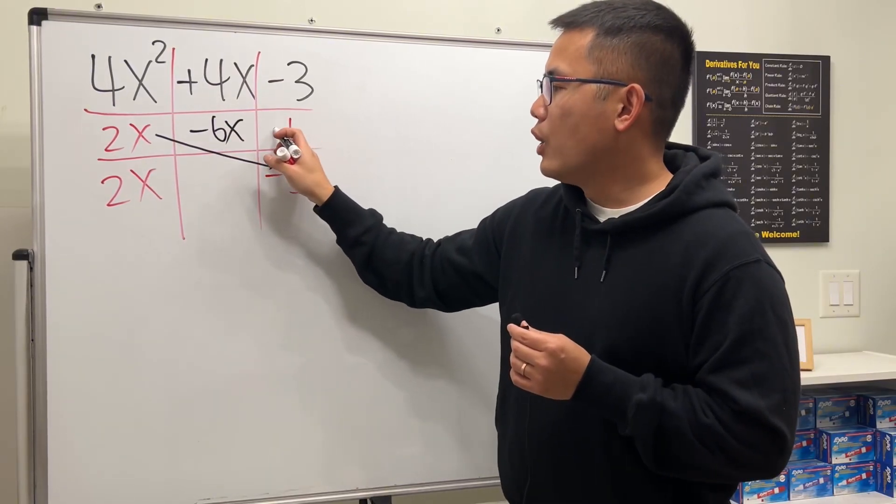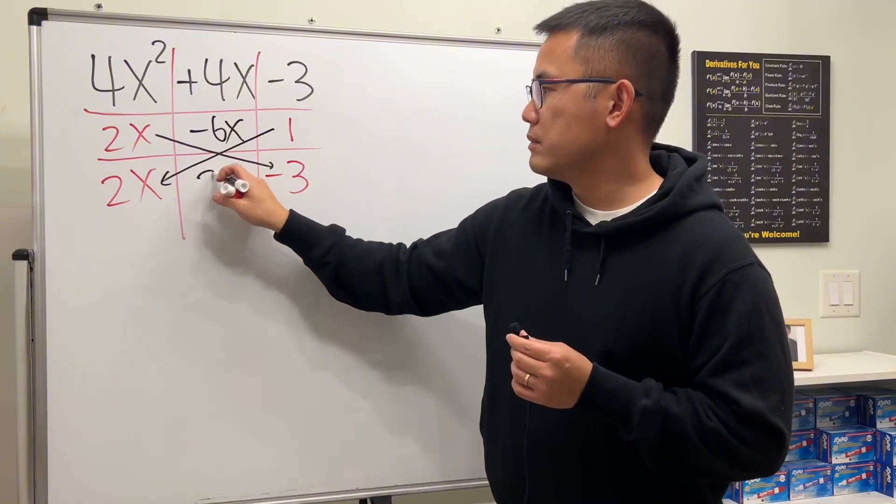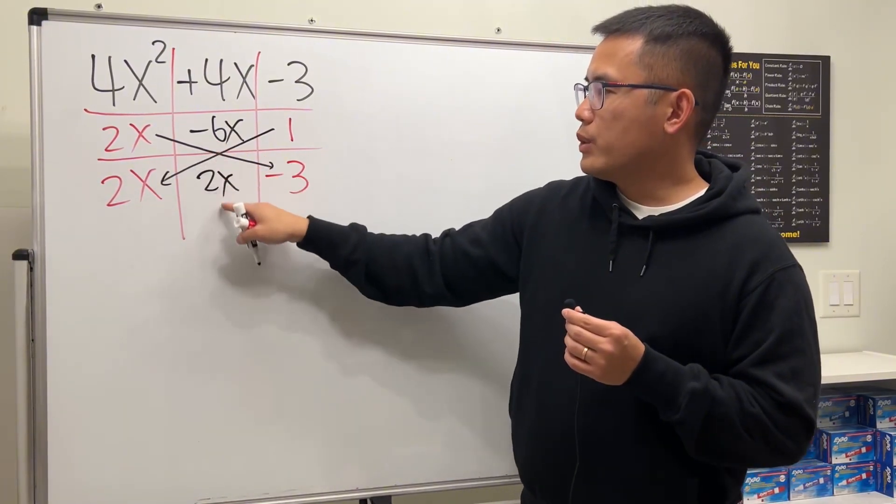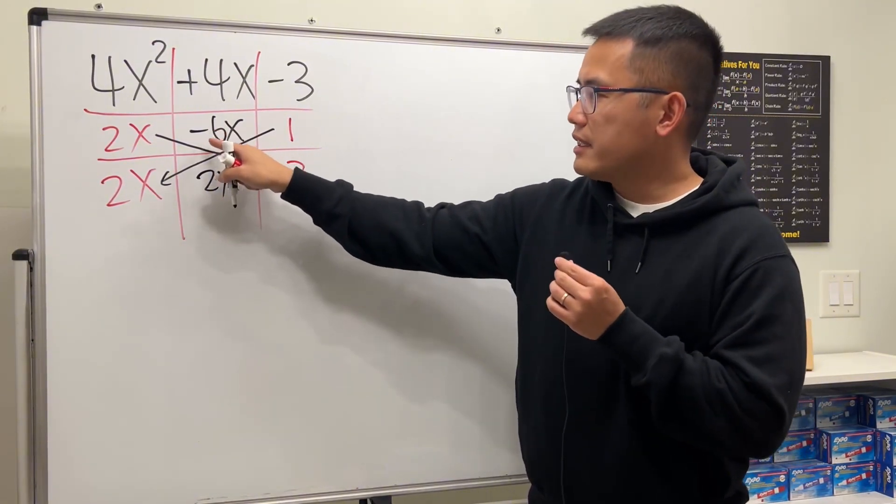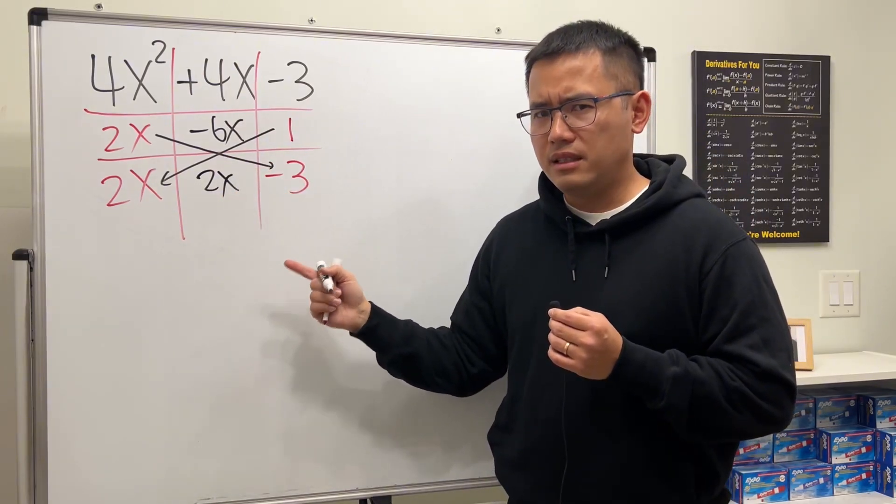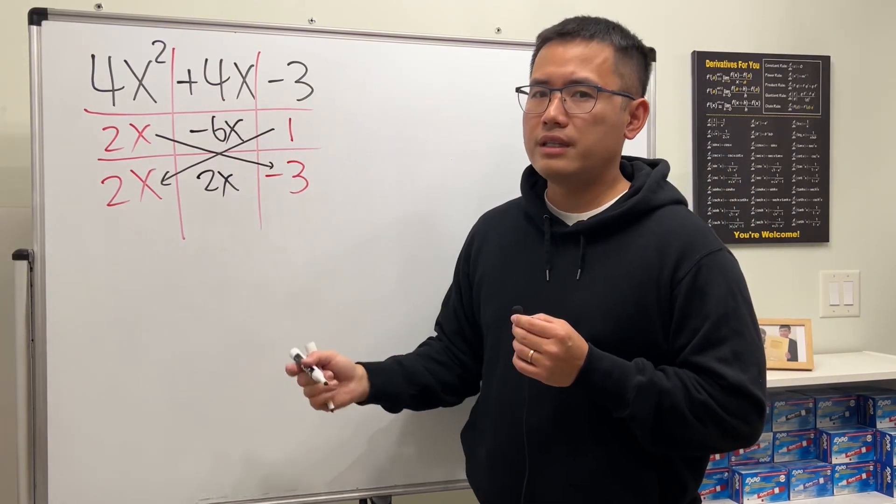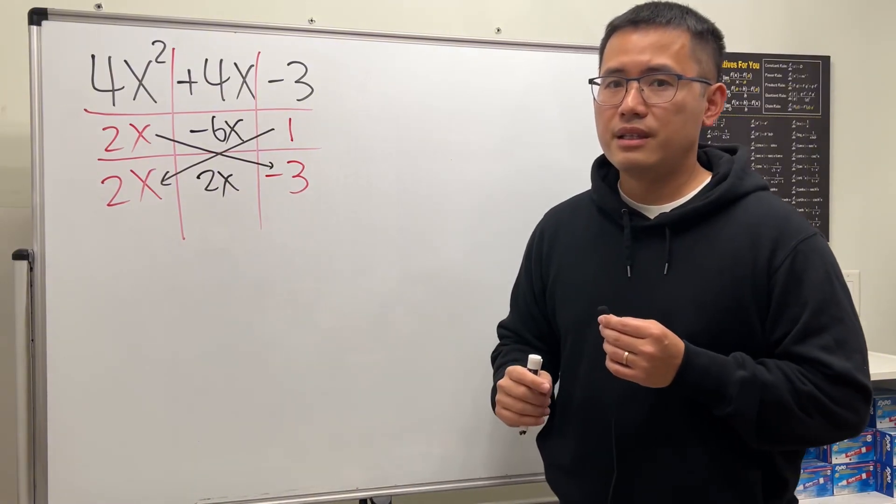And then here, 1 times 2x gives us 2x. Well now we are going to combine this and that: negative 6x plus 2x, that is negative 4x. This does not give us positive 4x, so this is incorrect.